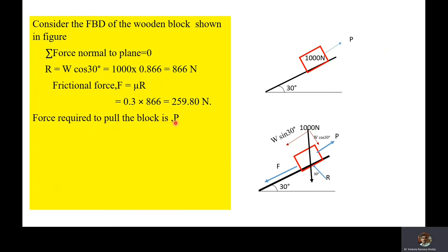Force required to pull the block is P. Consider the summation of forces along the plane is equal to 0. Then P - F - W sin 30° = 0. Then P is equal to F + W sin 30°.